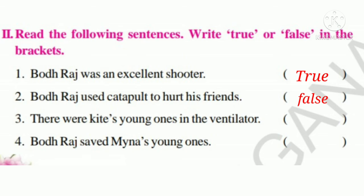Third one: There were kites' young ones in the ventilator. Is it right? There were minas' young ones in the ventilator, so this sentence is False. Fourth sentence: Bodhraj saved the minas' young ones. Yes, finally Bodhraj saved the minas' young ones, and he began to love the birds. Towards the end he became kind to them. So we can write True.